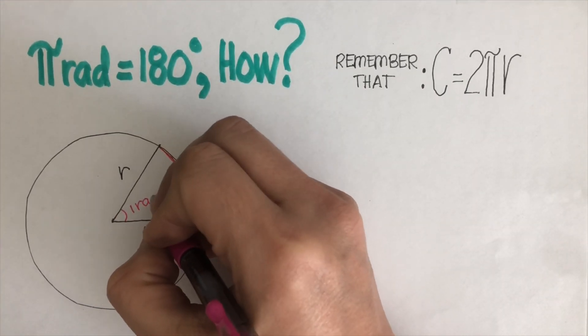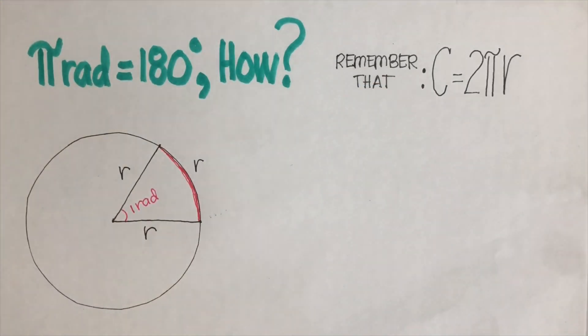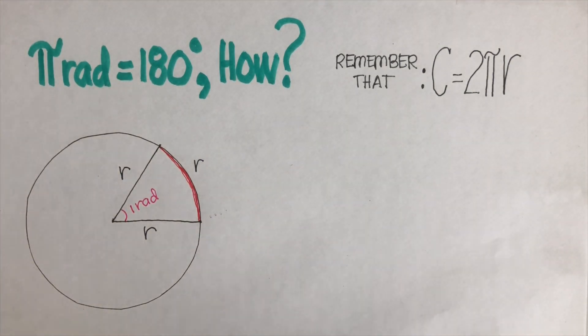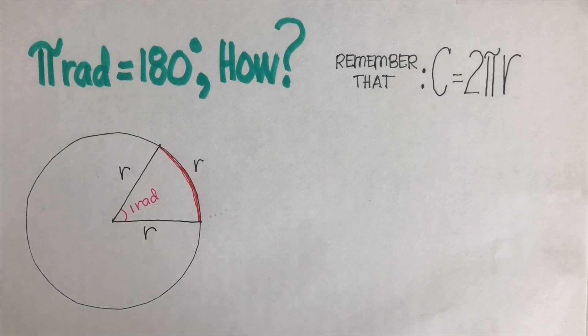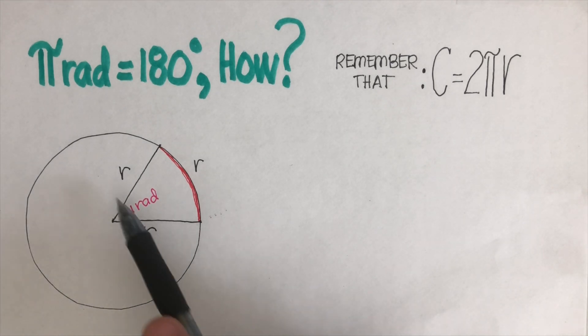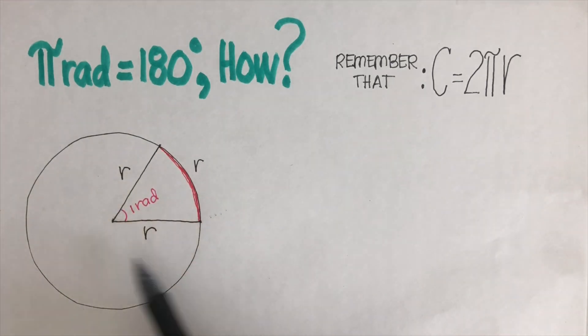That's how we get the concept of one radian. One reason it's called 'radian' is probably because it is surrounded by the radius.